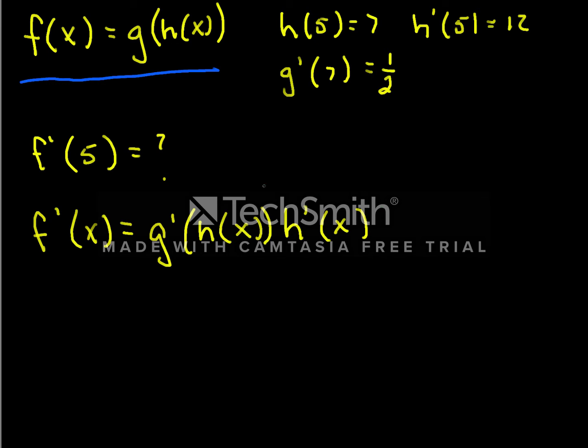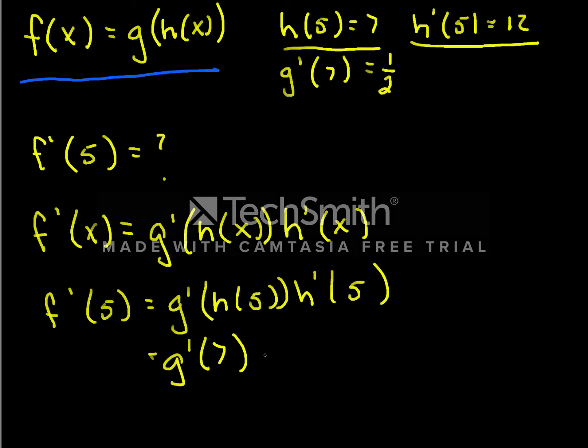And so f'(5) would be g'(h(5)) times h'(5). And h(5) we know is 7, and h'(5) is 12. So this is g'(7) times 12, and we know what g'(7) is, 1/2, lucky for us. So this is 1/2 times 12, which is 6.